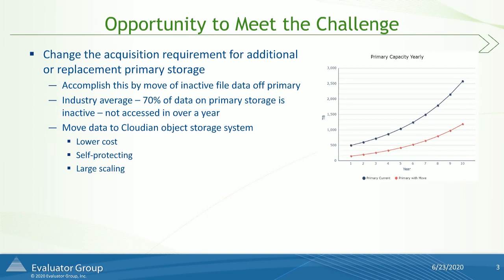It gets that data out of the data protection or backup cycle and really reduces those costs immediately if you can do it in a straightforward and simple fashion. There are a lot of programs out there that you can use to analyze what data is inactive on your primary storage, and on average it's typically about 70 percent. This data doesn't really need to be there. It doesn't mean you're going to delete it, but you want to put it somewhere where you can get access to it as needed, yet free up more expensive capacity. You want to move it to a storage system that has lower cost, can scale to meet capacity demands, and doesn't add to the data protection cost. We call that a self-protecting storage system.